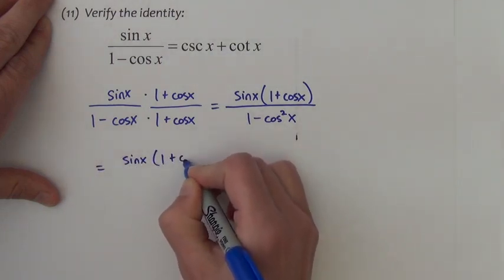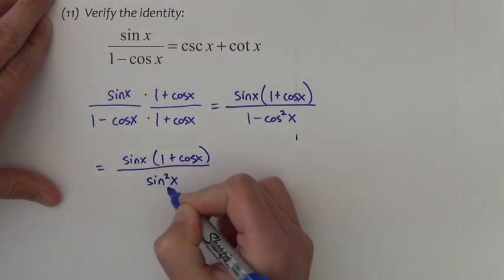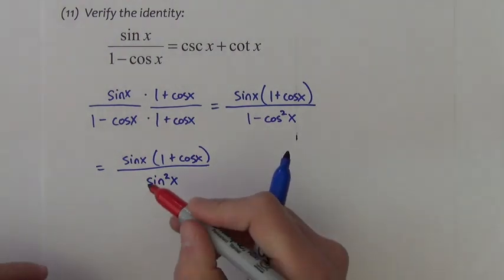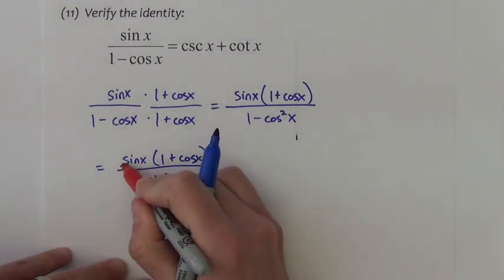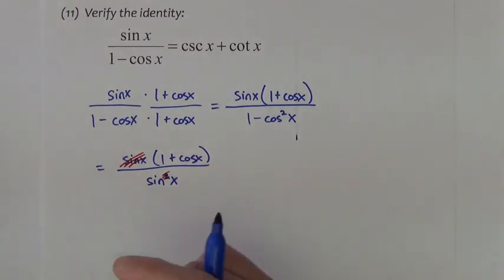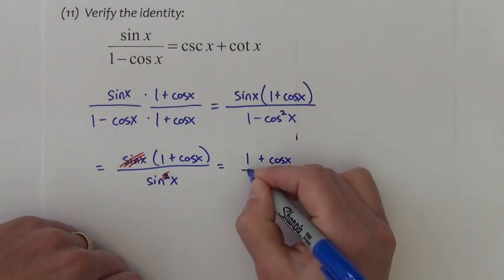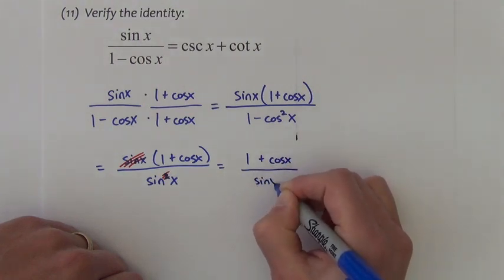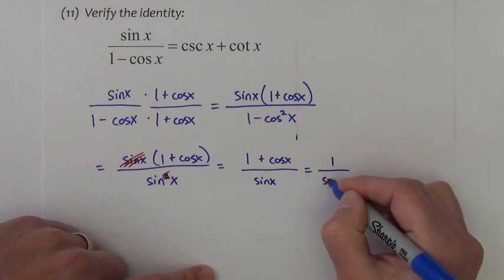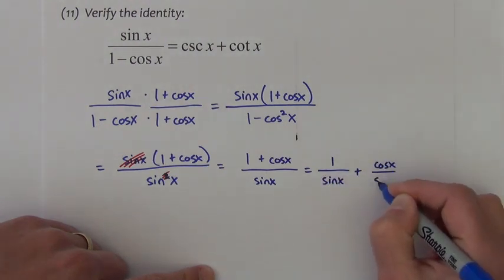Now the denominator, then gets replaced with sine squared from the Pythagorean identity. We can now reduce one of each of those sines, giving me one plus cosine x over sine x. And if I split up the fraction, I get one over sine x plus cosine x over sine x.